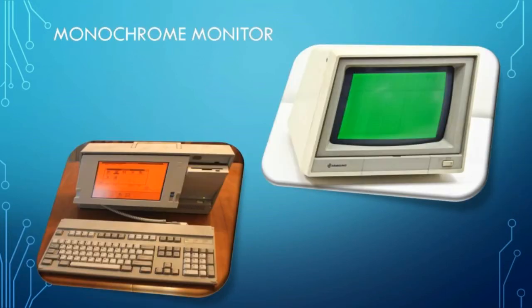Monochrome monitor uses a single color and it resembles the black and white TV. They are available in three different base colors namely soft white, green phosphor and amber. The soft white monochrome monitor was very commonly used. Nowadays these monitors are not in use as the advent of new technologies have made monitors more compact and easy to use.